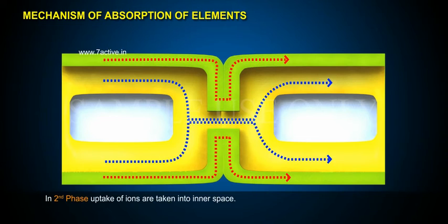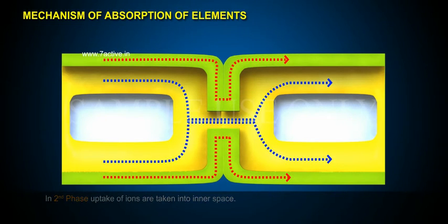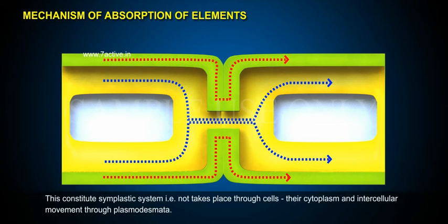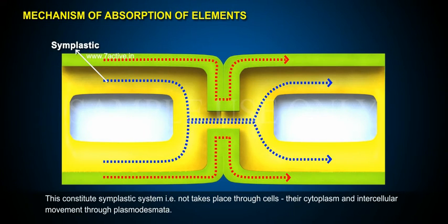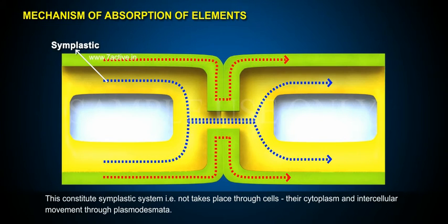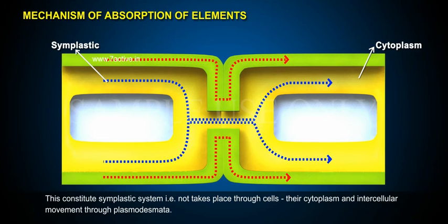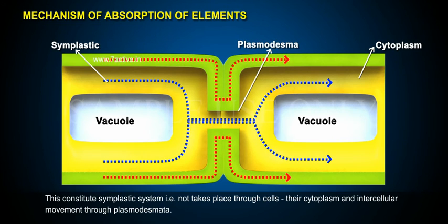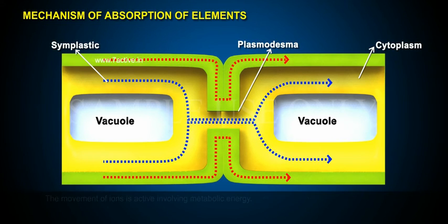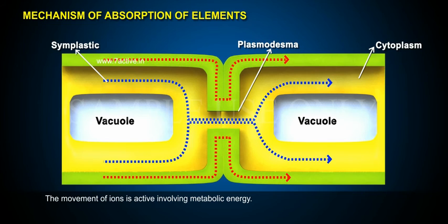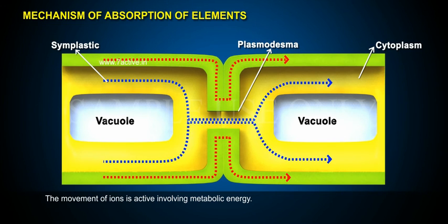In the second phase, uptake of ions takes place into the inner space. This constitutes the symplastic system, that is, movement takes place through cells — the cytoplasm and intercellular movement through plasmodesmata. The movement of ions is active, involving metabolic energy.